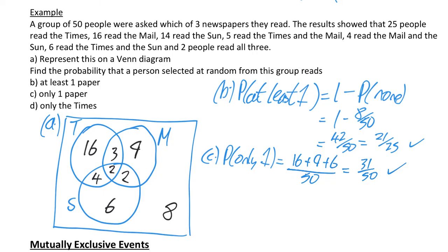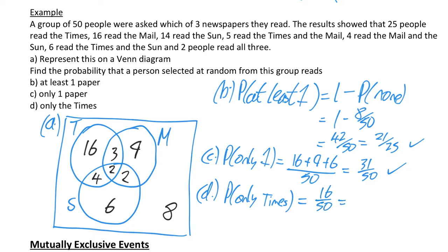The last part asks for only the Times. Once you've done your Venn diagram it's a very easy question — only the Times is just this 16, so it is 16 out of 50. Just remember to cancel down: that becomes 8 over 25, and that is us done for this video.